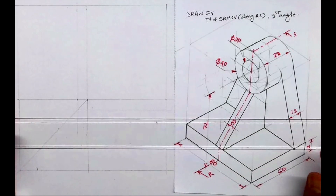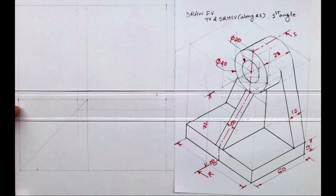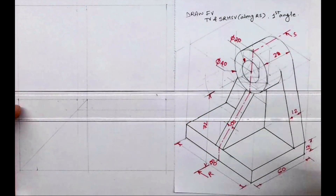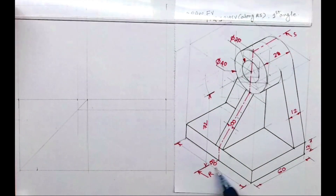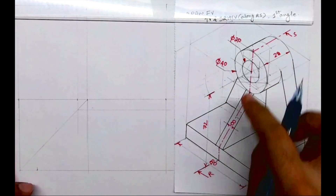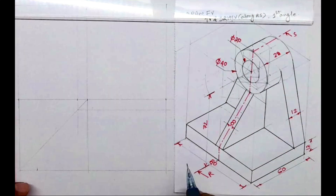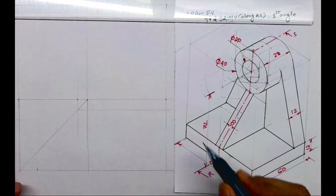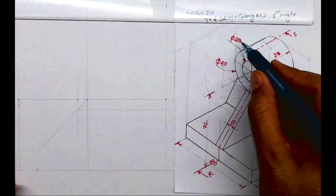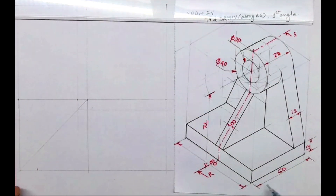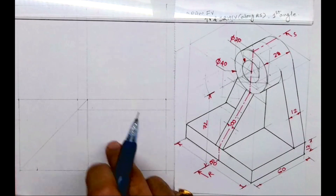Welcome to technical drawing. Today we'll see how to draw front view, top view, and sectional right-hand side view along RS in first angle. The object dimensions are: length 80, height 92 (72 plus 20), and width 60. First we will draw the layout and then we'll start.